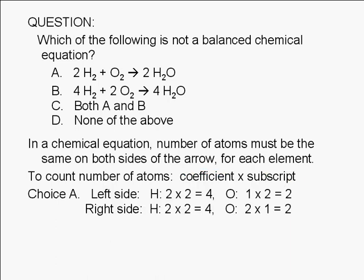Let's take a look at choice A. On the left-hand side, the coefficient of H2 is 2. The subscript of H in H2 is 2. So the number of hydrogen atoms shown on the left-hand side is 2 times 2, or 4.